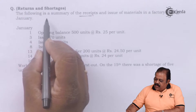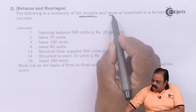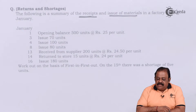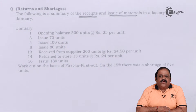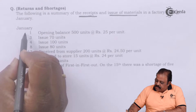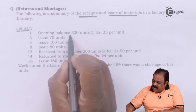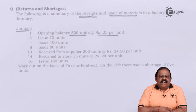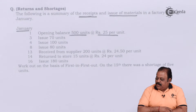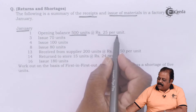The following is the summary of receipts and issues of material in a factory during January. The details are given for the month of January. January 1st: opening balance of 500 units at the rate of rupees 25 per unit, meaning at the beginning of the month we had 500 units valued at rupees 25 per unit.